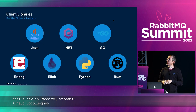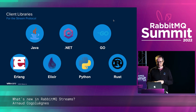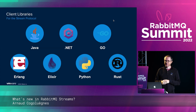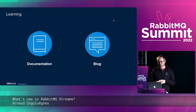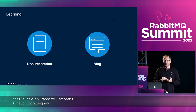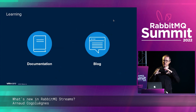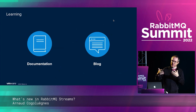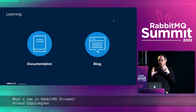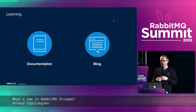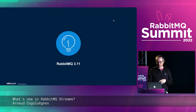We are building the ecosystem around streams. It's a significant effort because of the new protocol, but we're getting there little by little. We've also been writing documentation — the Java client documentation is quite comprehensive, covering not just the Java client but details about streams themselves. We've also been writing blog articles to explain features, explain internal functioning, and announce new features.